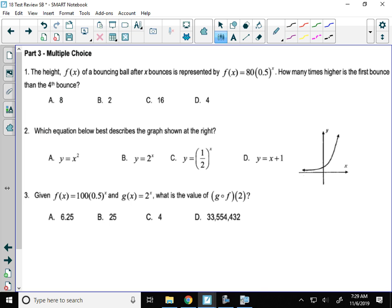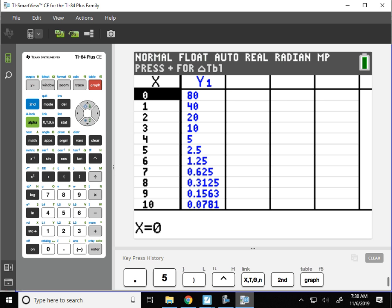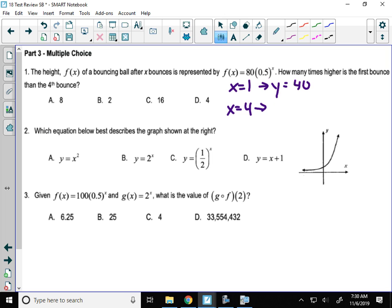So the first bounce for x equals 1 gave me a y value of 40. The fourth bounce at x equals 4 is 5. That's the height. Well, how many times bigger is 40 than 5? That would be 8, which is A. So make sure you're understanding that 80 isn't the first bounce. That's where the ball starts from.